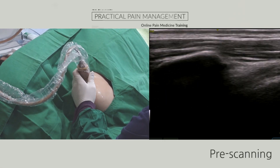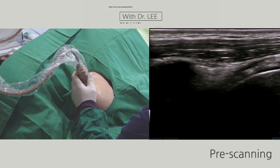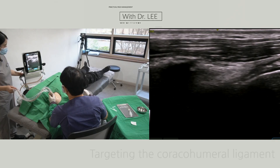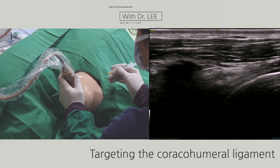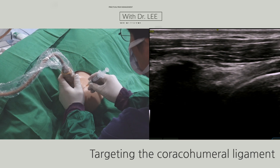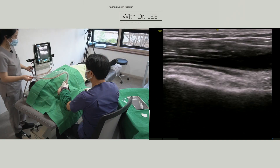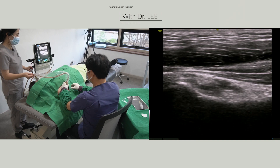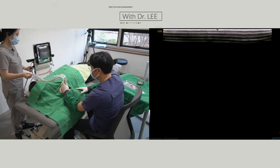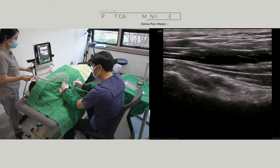Let's go to my operation room. Before holding the needle, I search the anatomic structures first. The first target is the coracohumeral ligament. My second target is the inferior capsule. My needle approaches from the anterior inferior to the superior posterior direction.